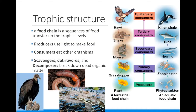Trophic structure is the pattern of feeding relationships. One way to view this is a food chain. The food chain shows the transfer of food — each step in the food chain moves up a trophic level. At the very bottom of the food chain are the producers. These are plants and algae that can do the process of photosynthesis. They don't need to eat food; instead, they use light to make their own food.